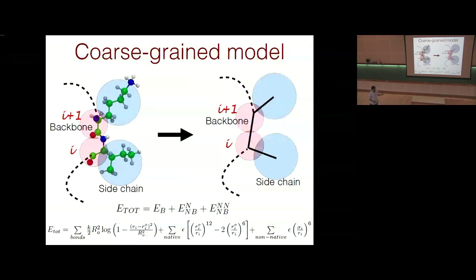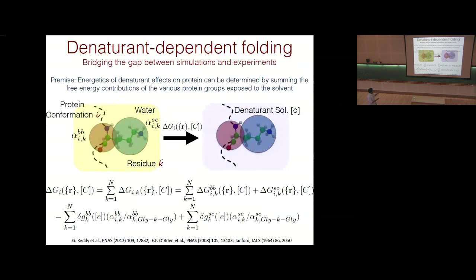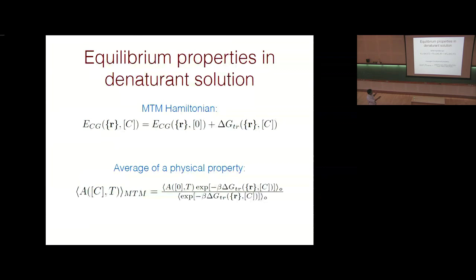Using this coarse-grain model with Langevin dynamics simulation, at the melting temperature the fraction of native contacts is plotted as a function of time, showing the protein hopping between folded and unfolded states — exhibiting simple two-state folding kinetics. However, simulations use temperature to fold/unfold the protein while experiments use denaturants like guanidinium and urea. To map simulation results onto experiments, we developed a model where denaturant concentration C is introduced and the protein coordinate r represents a protein conformation.